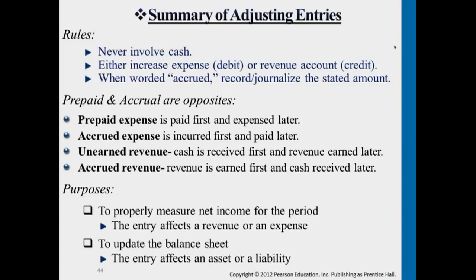For unearned revenue, we collected cash earlier and the adjustment turns a liability into revenue. For accrued revenue, we provide a service to a customer but haven't collected cash yet — we still need to make an adjustment. For accrued expenses, an example is salaries — salary payable — which also doesn't relate to the cash account. For prepaid expenses, you paid in advance and the adjustment turns that prepayment asset into an expense.